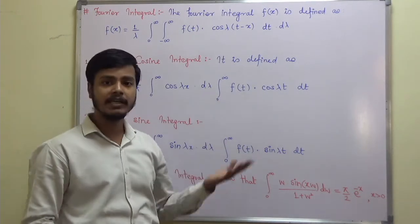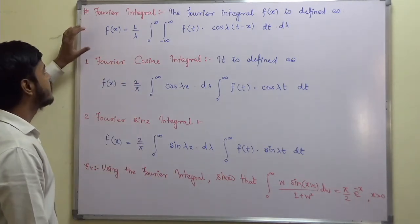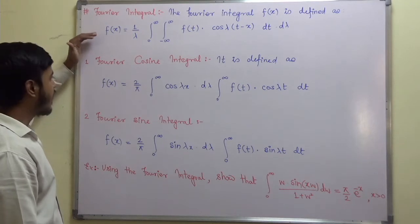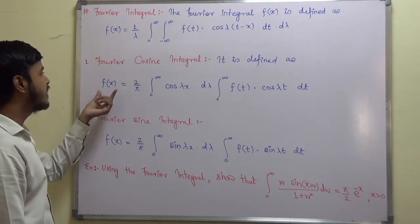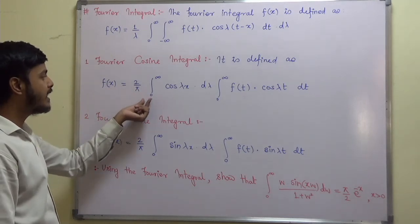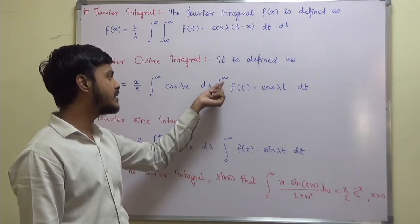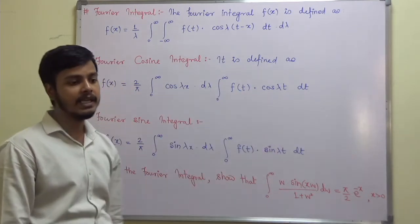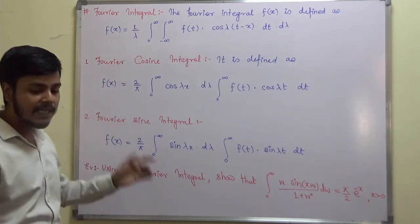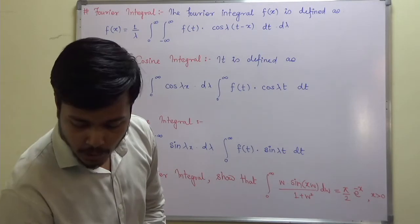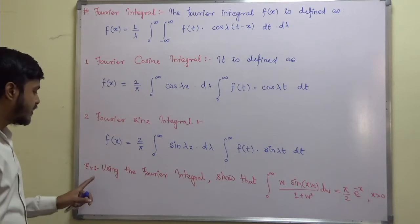In place of λ you may get ω or w or anything else. The Fourier cosine integral is defined as f(x) = (2/π) integral from zero to infinity cos(λx) dλ, integral from zero to infinity f(t) cos(λt) dt. In a similar way you can define the Fourier sine integral.